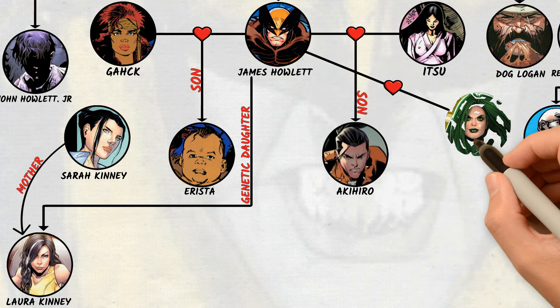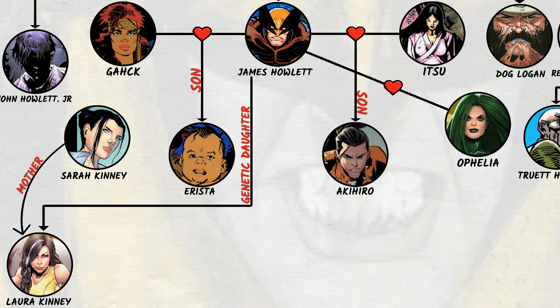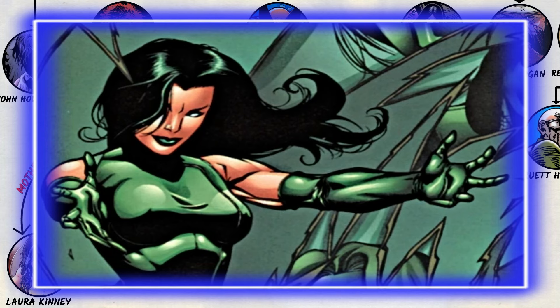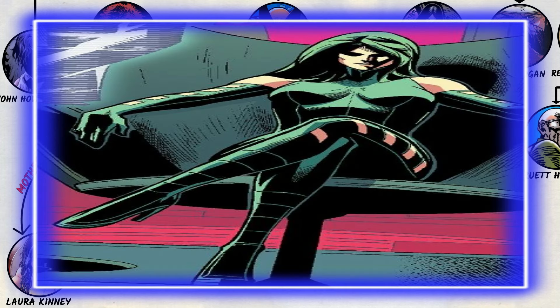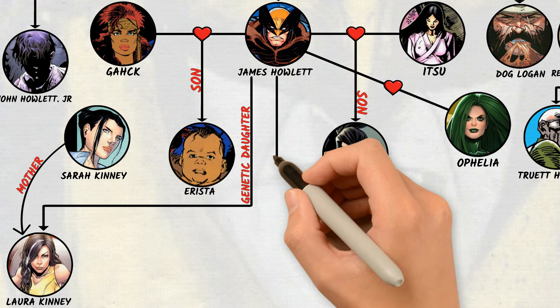Wolverine married Ophelia Sarkissian, also known as Viper, when she reminded him of his past debt to Seraph, their shared mentor, following his code of giri, or honorable debt. Wolverine accepted to marry the Viper. The Viper had bet that Wolverine's reputation in Madripoor would allow her to take the throne. She also employed him, along with Sabretooth and Shadowcat, to foil Hydra and the Hand's attempts to control the island.